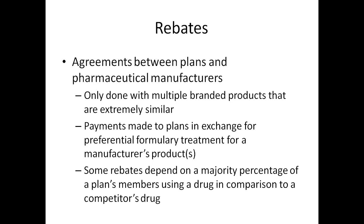All plans do this — it can save the plan a lot of money. In cases where the therapeutic difference between two drugs really isn't there, we feel it's a necessary tool. If a patient truly cannot take the preferred brand, they can always get a PA for the other brand. Some rebates also depend on the percentage of a plan's members using a drug compared to a competitor's, and some cover several drugs made by a certain manufacturer. It's one of the tools we use to keep costs down and try to keep premiums low for everybody.